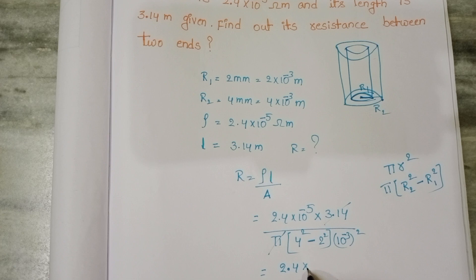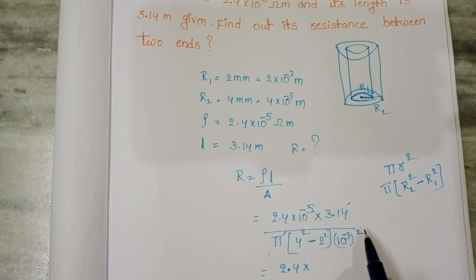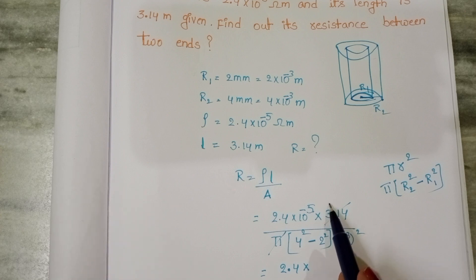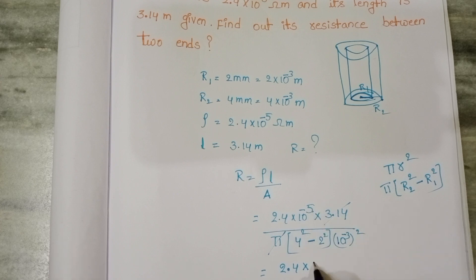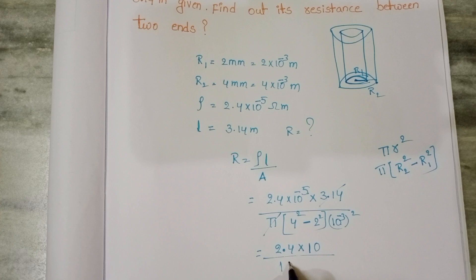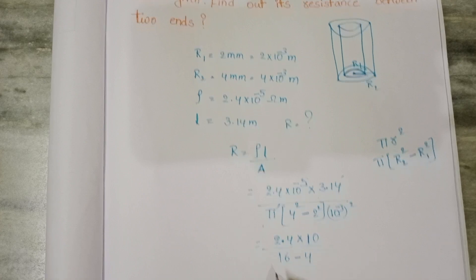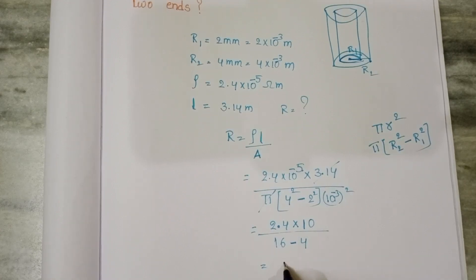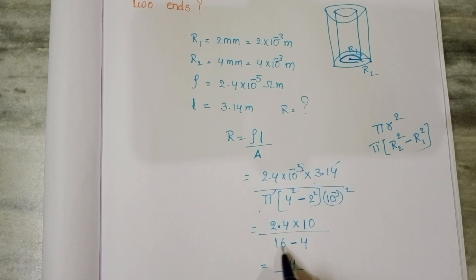2.4 × 10⁻⁵. It goes to numerator 10⁶, plus 6 minus 5, it becomes 10. 4 whole square is 16 minus 4. 2.4 × 10 equals 24. 16 minus 4 is 12, so 24 divided by 12 equals 2.